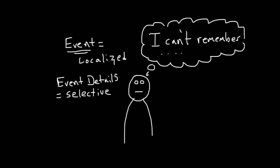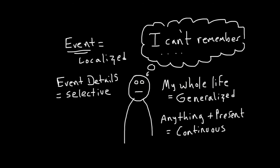In generalized amnesia the memory loss encompasses the individual's entire life. In continuous amnesia the individual cannot recall events up to a specific time including the present.